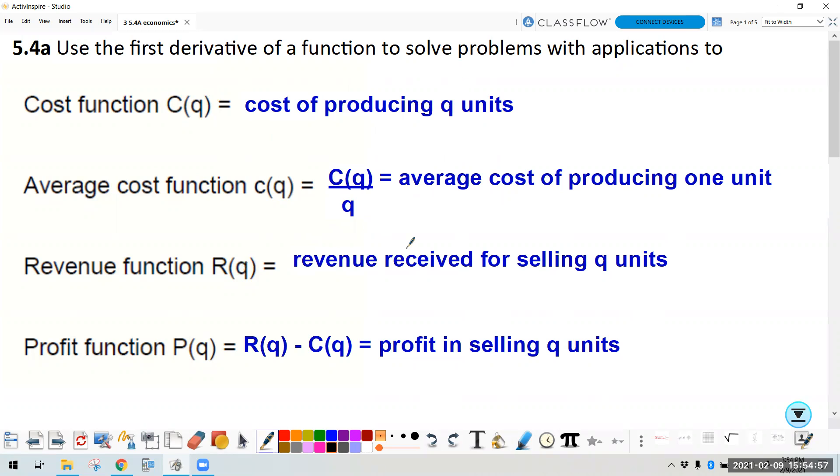Revenue is the money you receive from selling that many units. And profit is revenue minus cost. That's the amount of money in the end. It's kind of like what you take home. So you use the money earned minus the output of the cost. That's your profit.